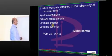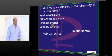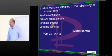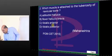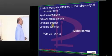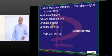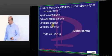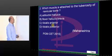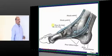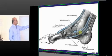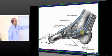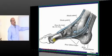Which muscle is attached to the tuberosity of the navicular bone? The answer is tibialis posterior. If you look at the tibialis posterior, it ultimately comes and attaches onto the navicular — that is what you need to remember.